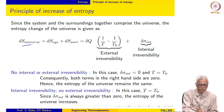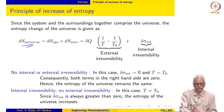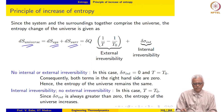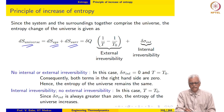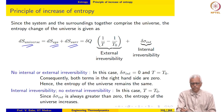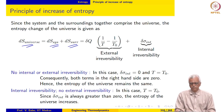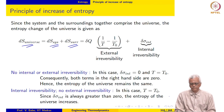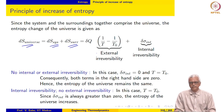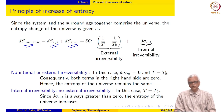The entropy change of the universe, dS universe, is equal to dS system plus dS surroundings. There are two terms in this expression for the change in entropy of the universe.